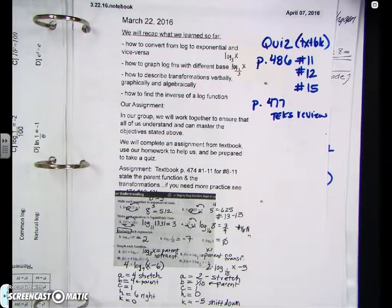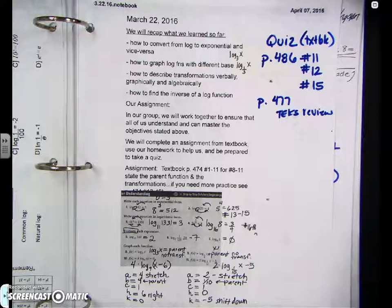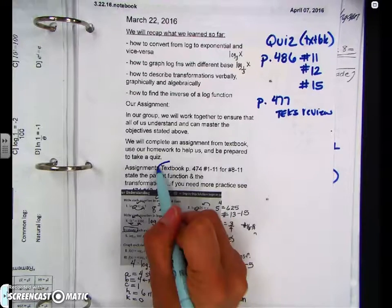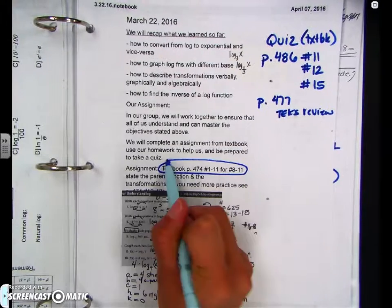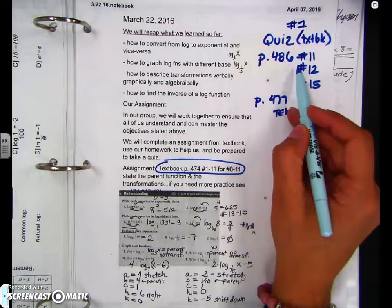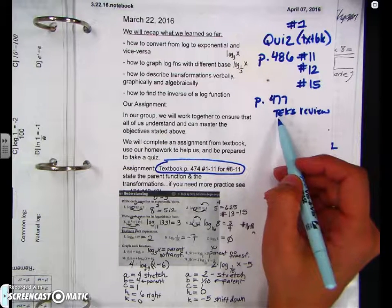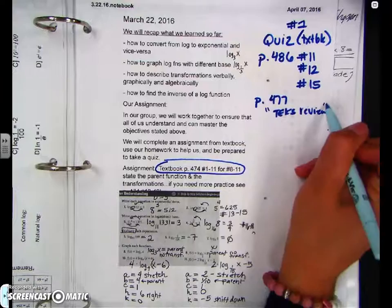Everything that we had done in the class, we had a textbook assignment. On the back of that textbook assignment we took our quiz. Quiz number one was page 486, numbers 11, 12, and 15, and page 477. It's called TEKS review. It doesn't really have a number, but that was like quiz number one.